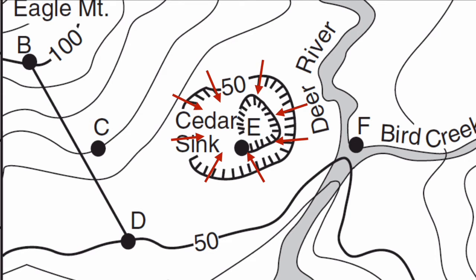If you were not given information associated with the values — this one happens to give you the index contour — if you were asked what is the value of the depression lines in this feature, the first hachure line is always going to be equal to the last contour line that you crossed. In this case the value is 50 feet, because the last line crossed was the 50-foot line. So it repeats itself, and then the next line inside would be the contour interval, but going down.